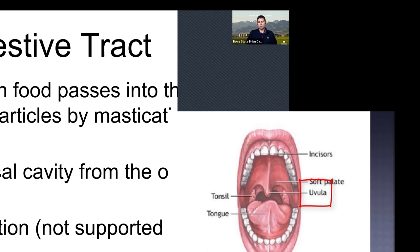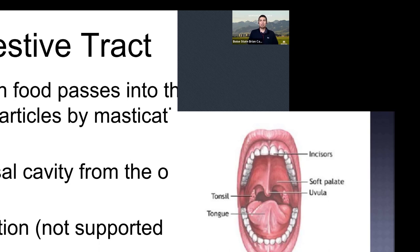The uvula is that hanging ball in the back of your throat — it hangs off the soft palate and is there to direct food. Some patients with obstructive sleep apnea have so much tissue in the back of the throat that they perform uvulectomies, or even a uvulopalatopharyngoplasty, excising part of the soft palate to create more room in the back of the throat.